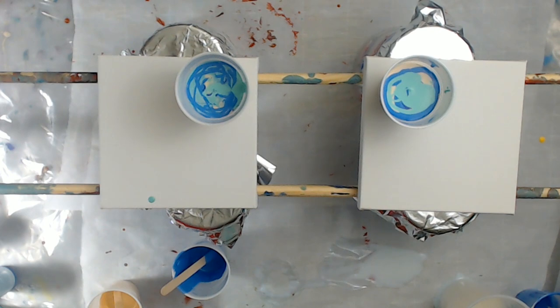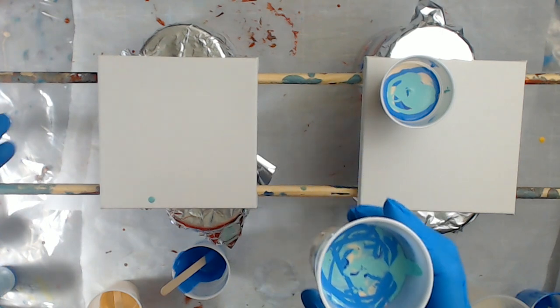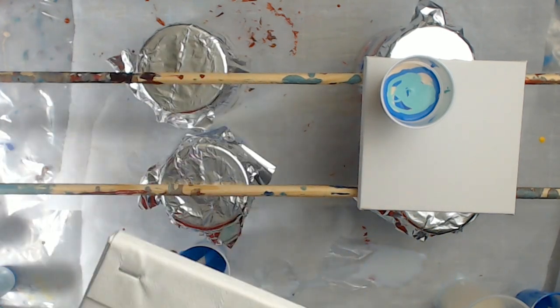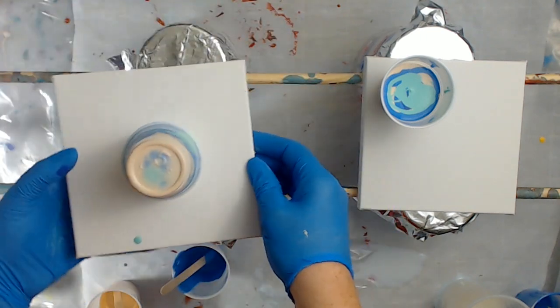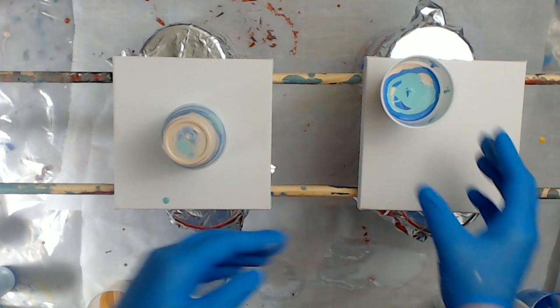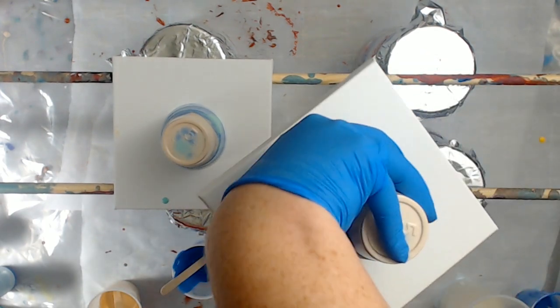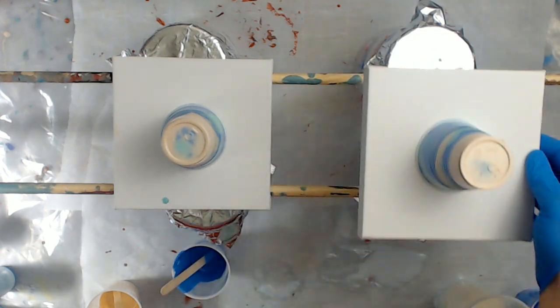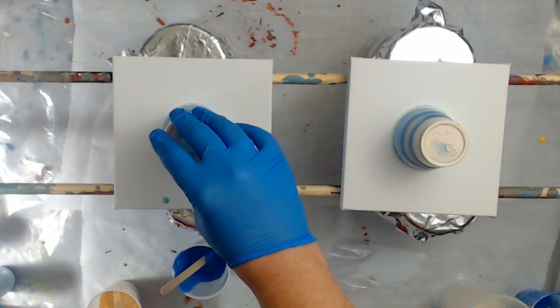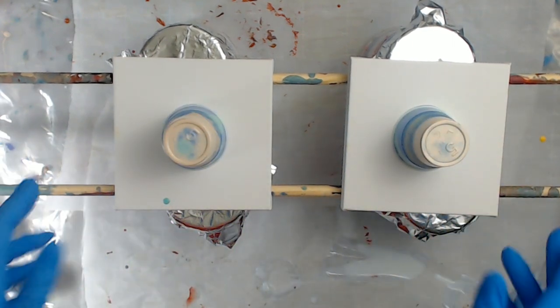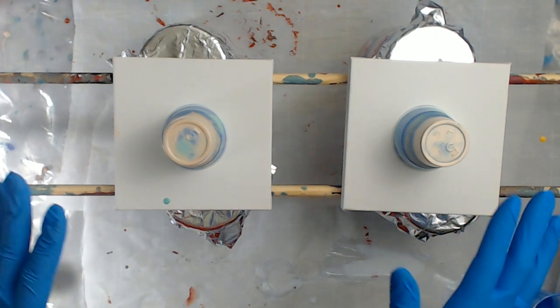There's about the same amount in each one. This is more fluid so it will flow all over. We're going to do a flip cup. Remember there is silicone in these or dimethicone. It's really easy to do with these itty bitty canvases. You have to be careful not to crush your cup.